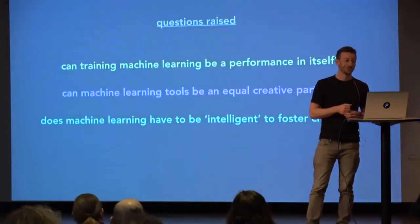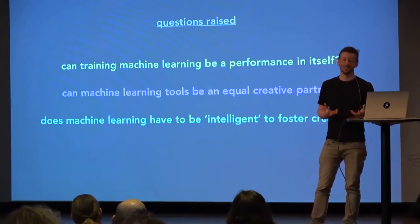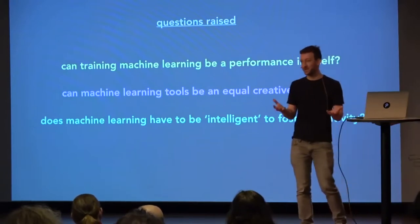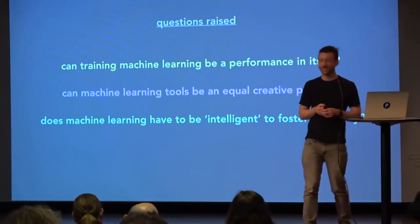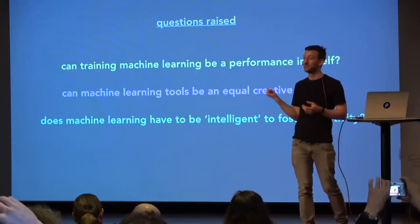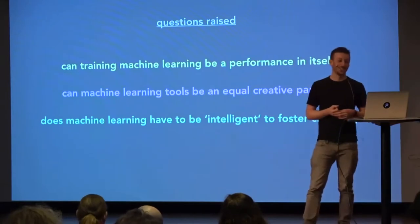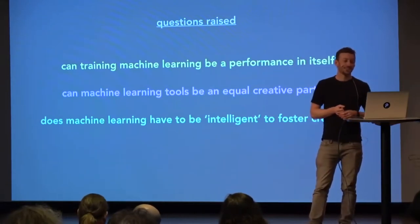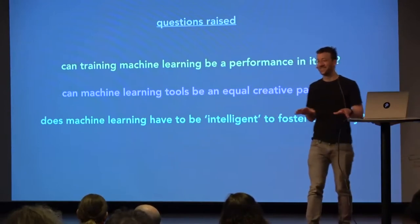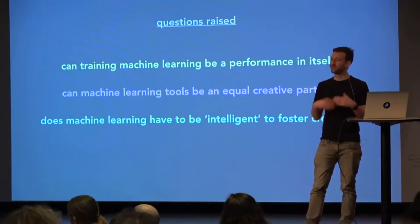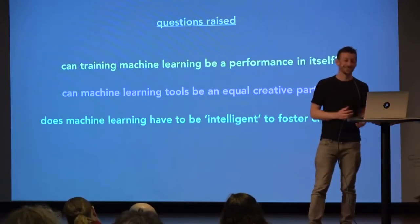Through doing this, a few questions were raised: can training machine learning actually be performance in itself rather than the outcome, which we hadn't expected? The classic one: can machine learning tools be an equal creative partner? We were doing that by provocatively saying you can have these ideas for free to use next year when you come back. And does machine learning have to be intelligent? We were interested in this as it's deliberately a little bit stupid — not clever machine learning. We were making people come up with stupid ideas and bringing it down to an artificial stupidity level rather than intelligence, which is quite fun.